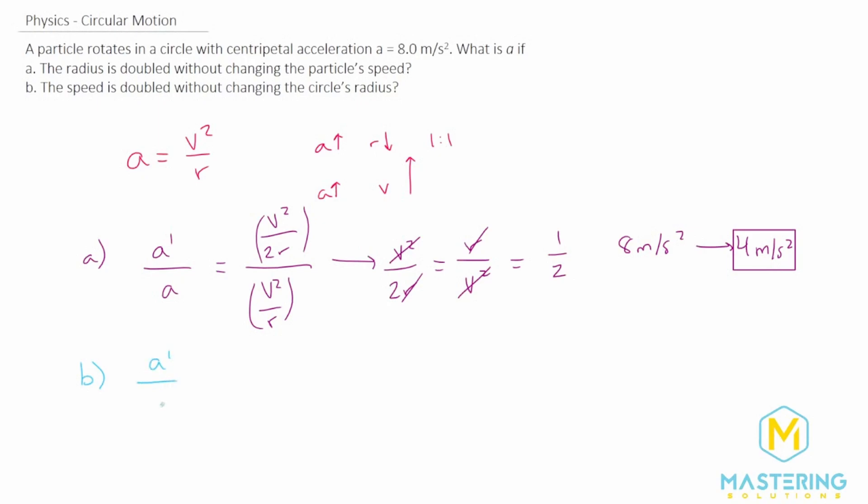For the new acceleration to the old acceleration, we have the same thing, v squared over r. But for the new acceleration, we're doubling the velocity.